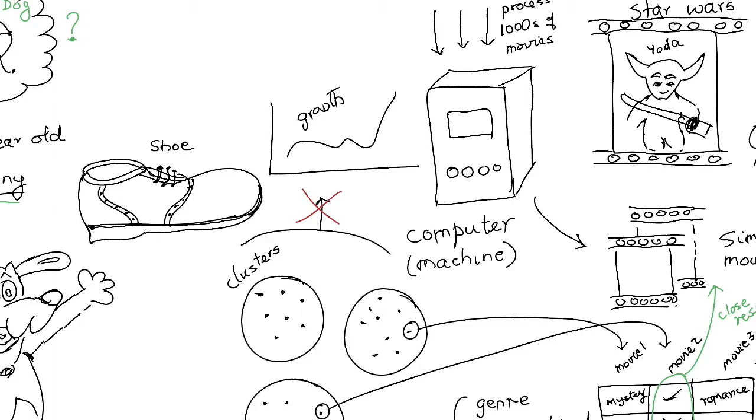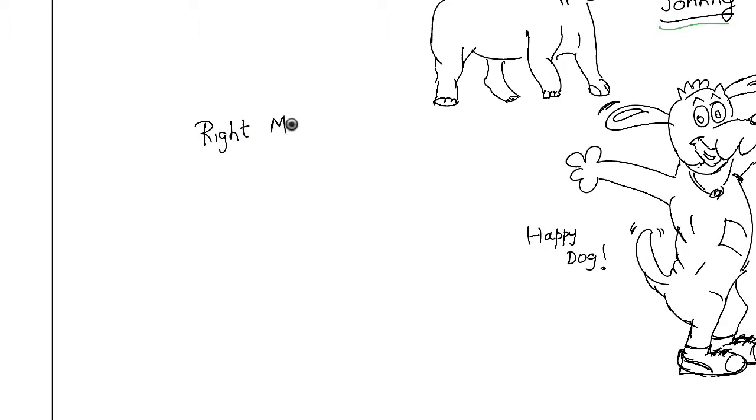That requires a different model. So the secret to helping a computer learn is to design the right kind of model. Humans have to do that.